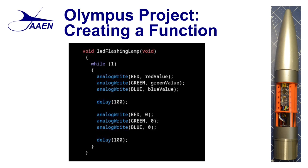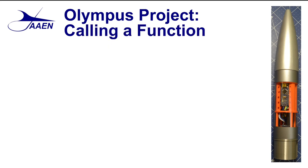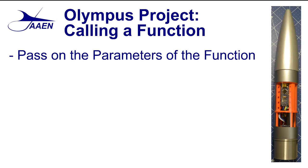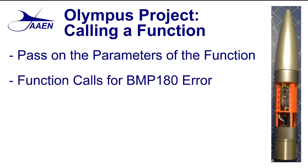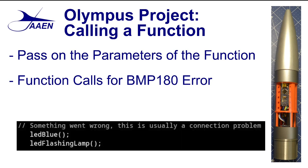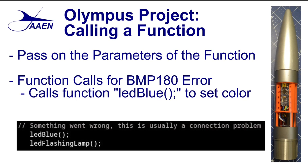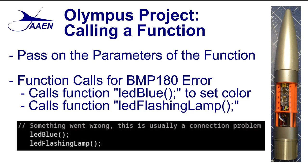Now that we've written the function, the next thing we need to do is call that function from elsewhere in the software. Whenever we want to call a function, we simply need to pass the name of the function and its parameters. In this case, we're going to look at the function calls for the BMP180. We can see there are two functions being called: the first calls for the function LED blue, which changes the color of our lamp to blue, and then it calls the function LED flashing lamp, which causes the LED lamp to start flashing on and off.